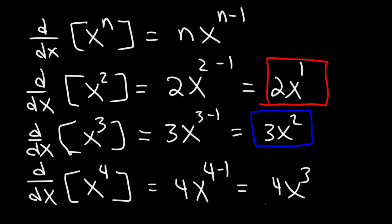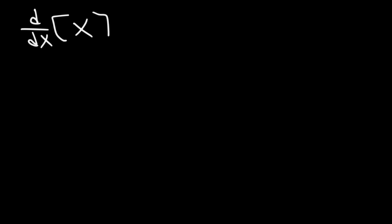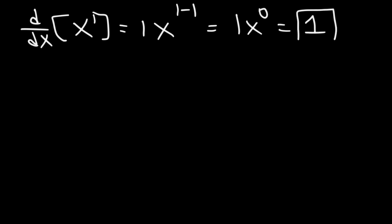And so that's how you could use the power rule to find the derivative of a function. Now what about the derivative of x? So this is basically x raised to the first power, so n is 1. It's going to be 1x to the 1 minus 1, which is 1x to the 0. Anything raised to the 0 power is 1, so we just get 1.